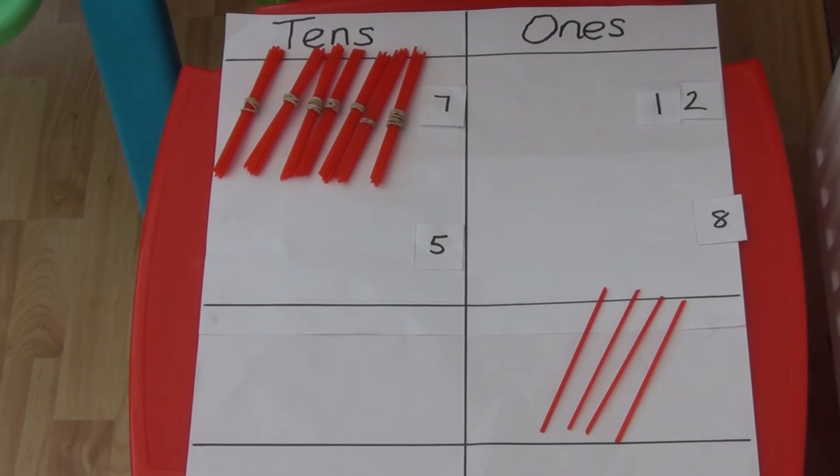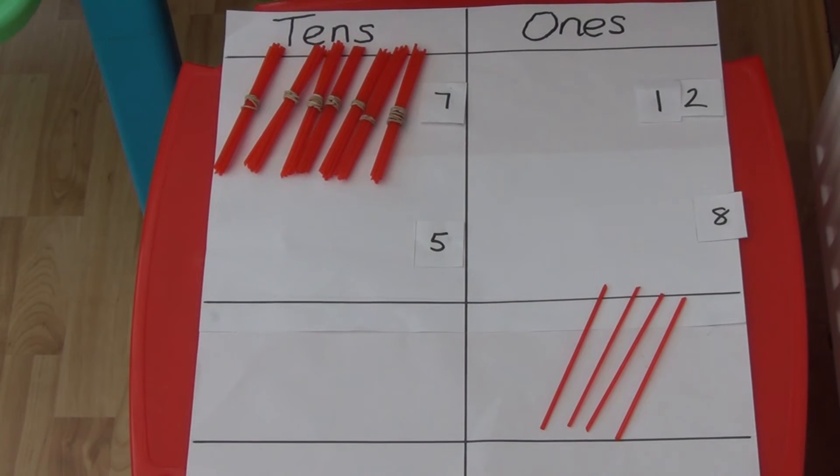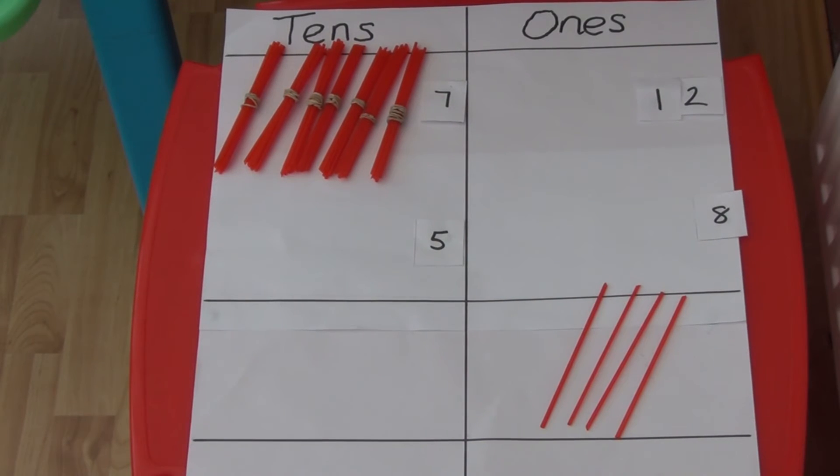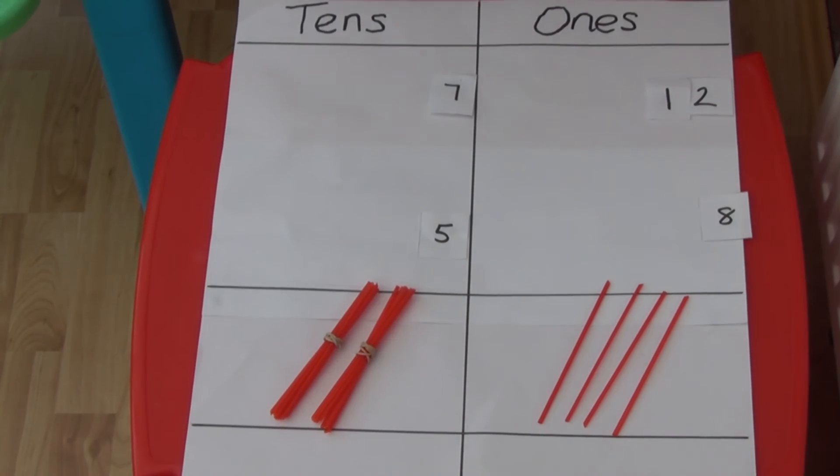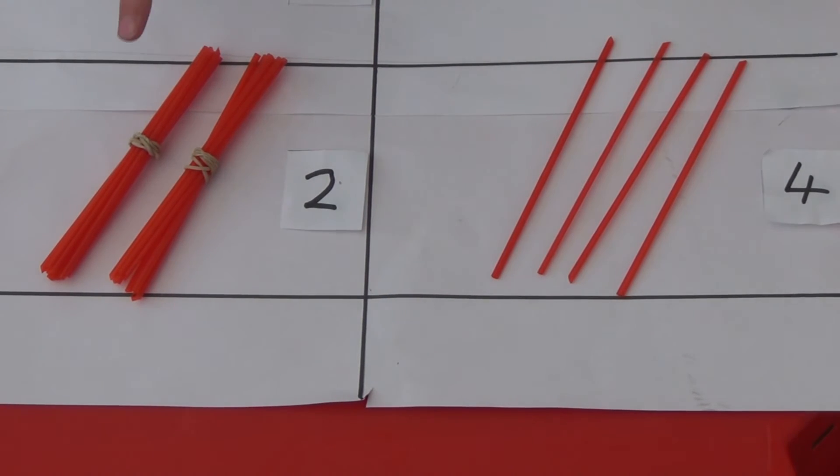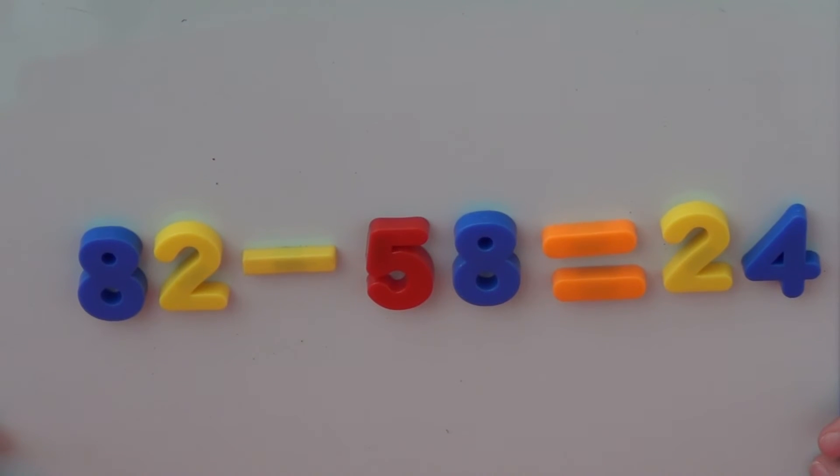We can now subtract the tens. We have 7 tens left so I will need to subtract 5 tens from my 7 tens. We now have 2 tens and 4 ones which is 24. So 82 take away 58 equals 24.